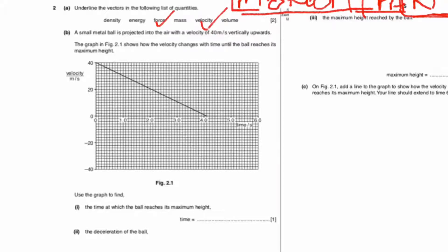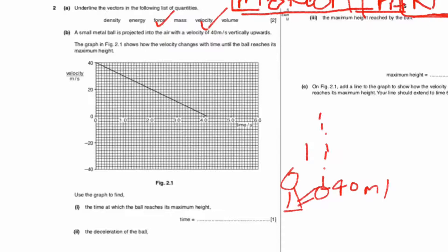The ball is thrown up — you can see the boy is throwing the ball up in this direction. The initial velocity is 40 meters per second. At the center point it is 20 meters per second, and when it reaches the maximum height it is 0 meters per second, because it stops for a while.